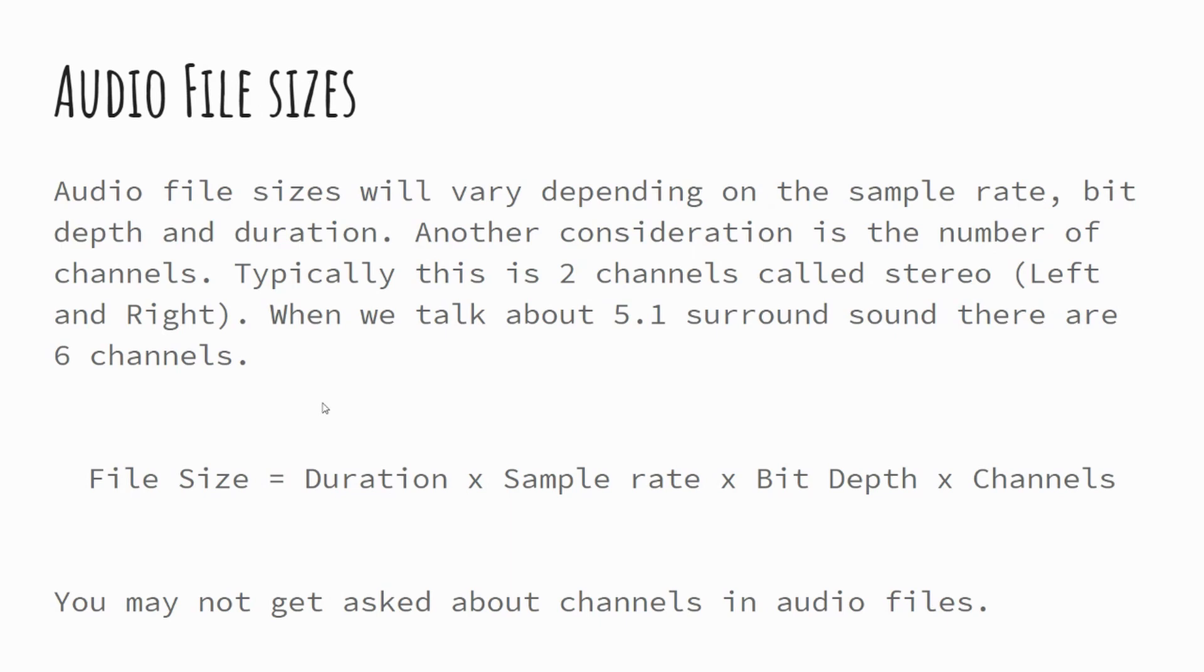And if you've heard of, for example, 5.1 or 7.1 surround sound, that again is saying how many channels there are. So five channels and a one central channel, so there would be six channels in total. So if you're given the information about channels, you need to just multiply that out as well. So it's exactly the same with all our other file sizes. We just multiply everything out. So duration times sample times bit depth times channels. That will tell you how many bits your file is taking up. Remember, divide by eight to work out how many bytes by 1,000 or 1,024 kilobytes and so forth.